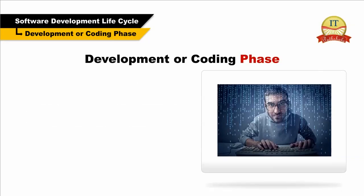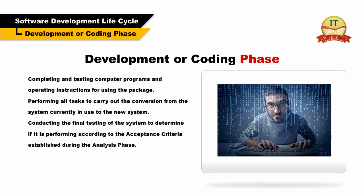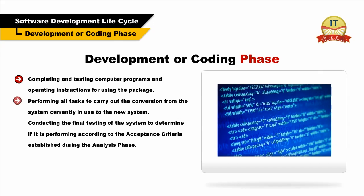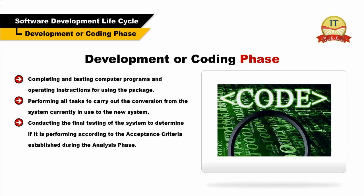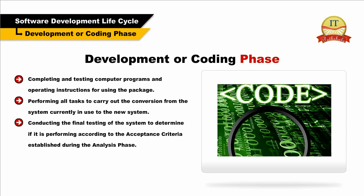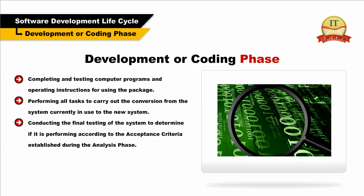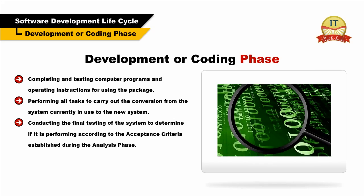Development or Coding Phase: The development phase includes three activities: completing and testing computer programs and operating instructions for using the package; performing all tasks to carry out the conversion from the system currently in use to the new system; and conducting the final testing of the system to determine if it is performing according to the acceptance criteria established during the analysis phase.